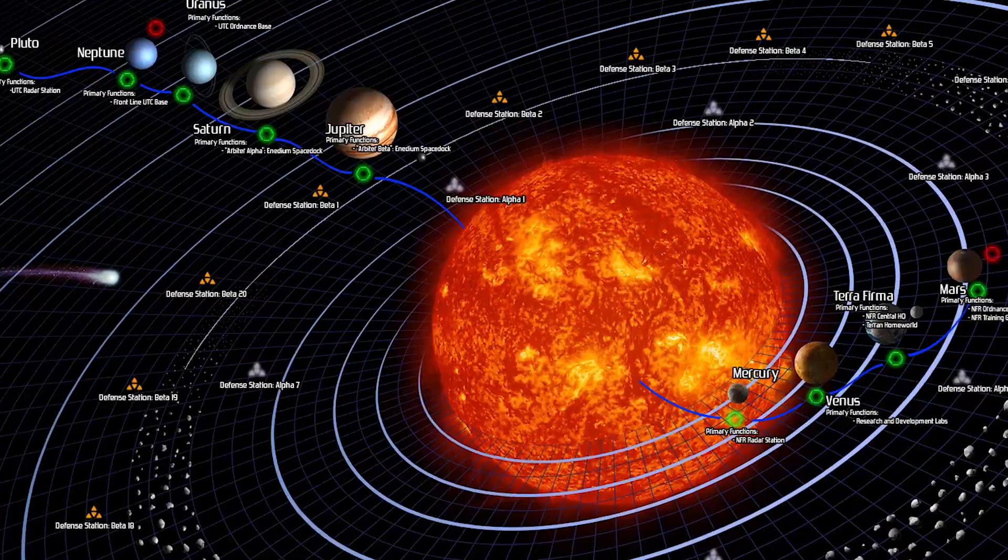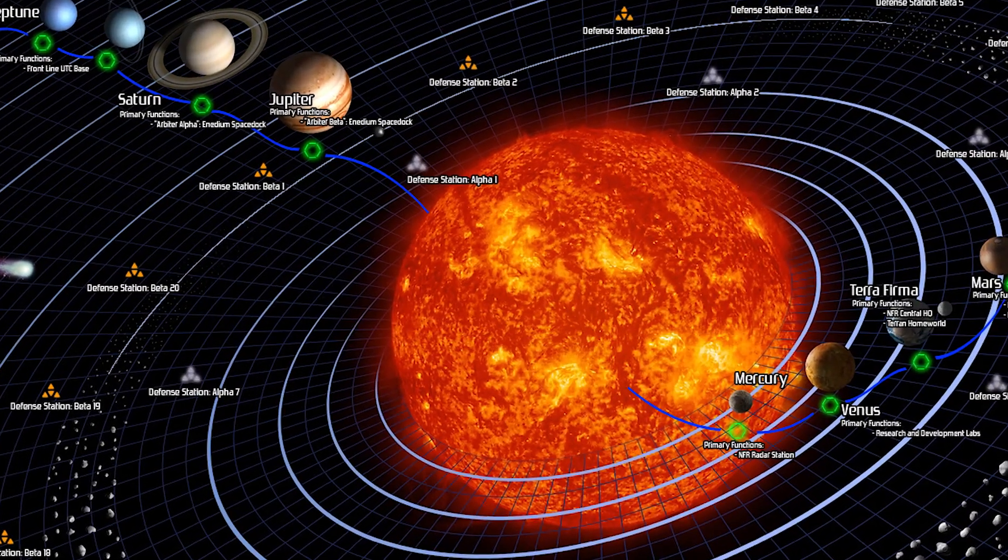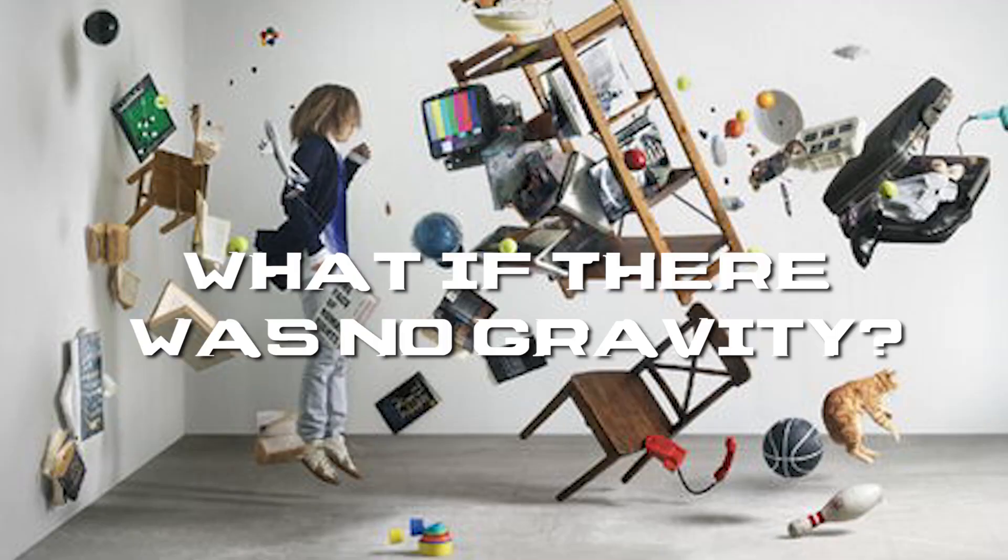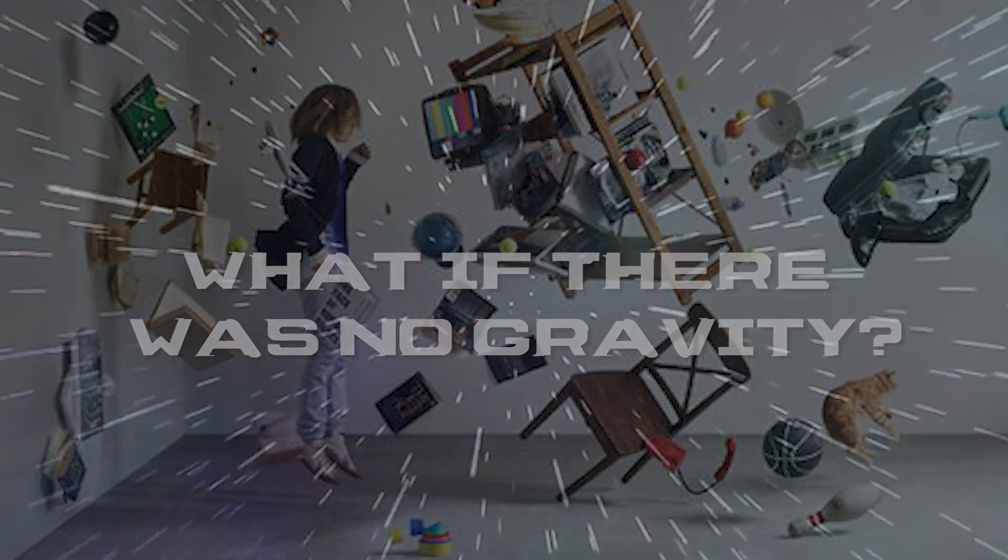Gravity keeps us grounded. It keeps the planets in orbit around the sun. It keeps the moon in orbit around us. But what would the universe be like if there were no gravity at all?